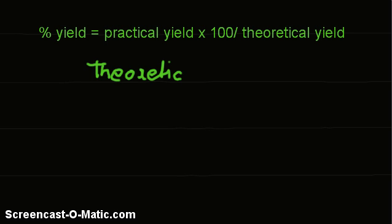Theoretical yield equals practical yield divided by percentage yield times 100.